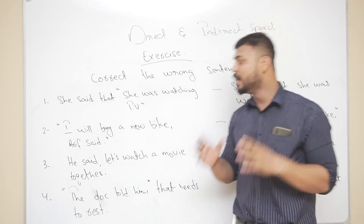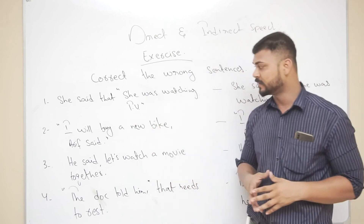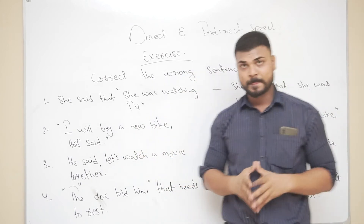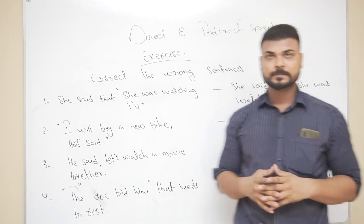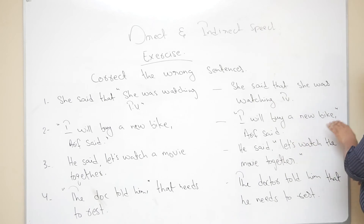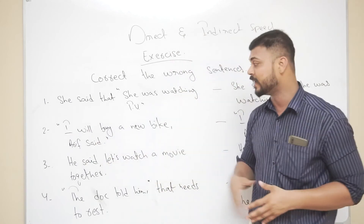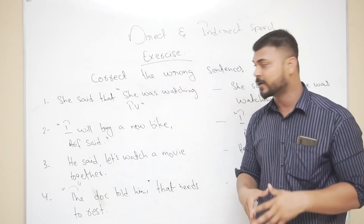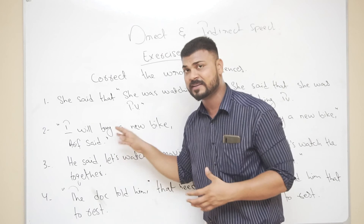The next sentence is: I will buy a new bike, RSA. The inverted commas are covering the entire sentence — what are the mistakes here? The mistake is that the inverted commas should only cover the quoted words, and RSA should be outside the inverted commas because these are the words said by RSA. This is a direct speech example.